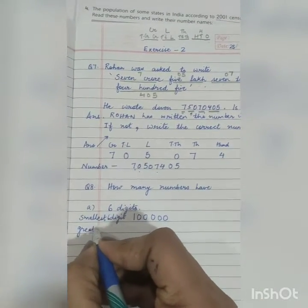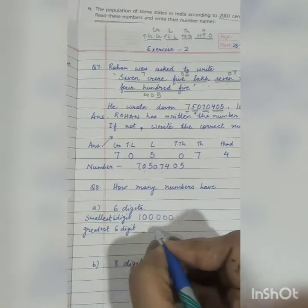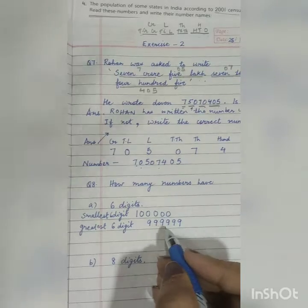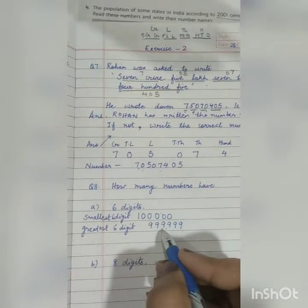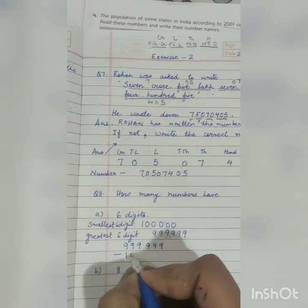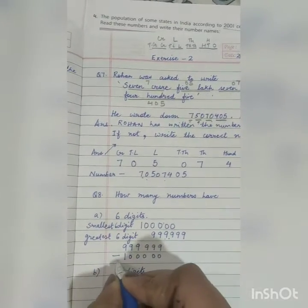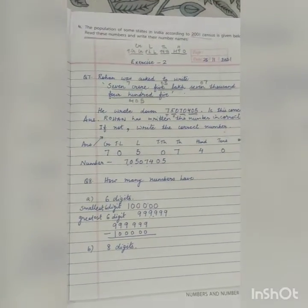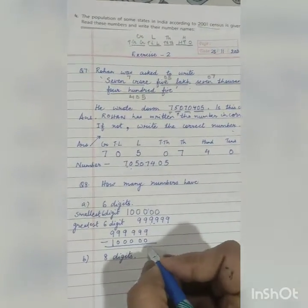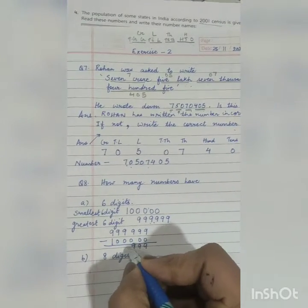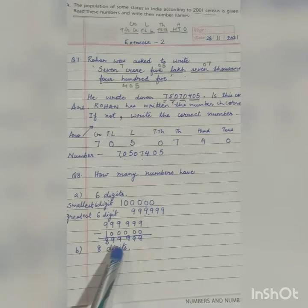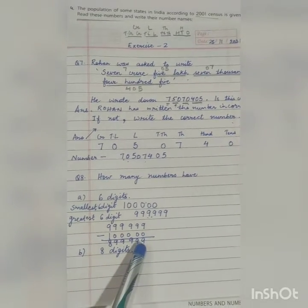Now smallest 6 digit number. Now write greatest 6 digit number: 9 9 9 9 9 9. Okay, so now children, if we subtract the smallest from the greatest, then the number we will get is all our 6 digit numbers. But one digit has been reduced, that is this one, 1 0 0 0 0 0. So now this tells us, what will we do with it? Our number is 8 9 9 9 9 9. This many 6 digit numbers there are.